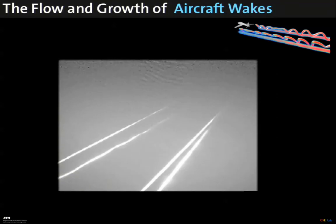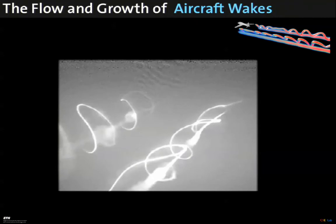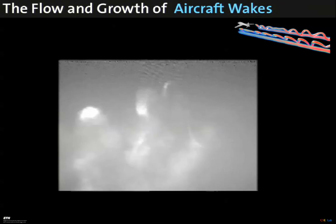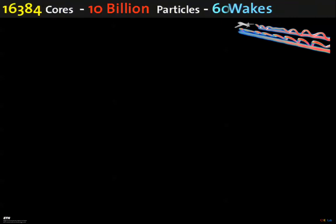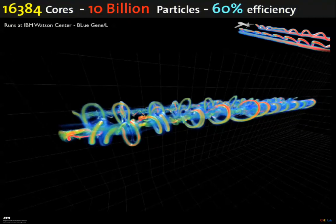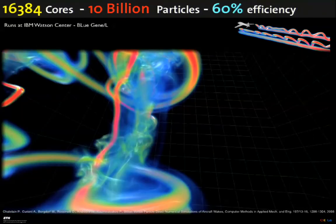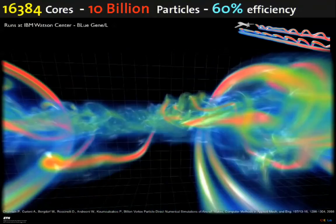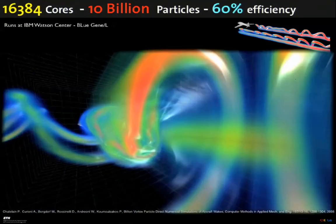Here are some other simulations. We are looking at the flow and growth of aircraft wakes. This is interesting because when your plane is taking off, you have to wait for the plane in front so you don't tumble into these big vortices. Back in 2008, we were able to do large simulations using 10 billion particles and achieved 60% efficiency on an IBM Blue Gene massively parallel machine.